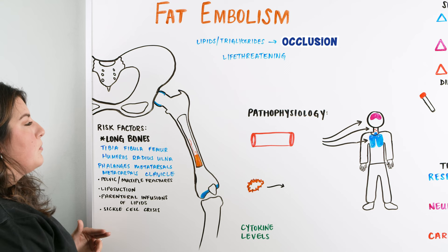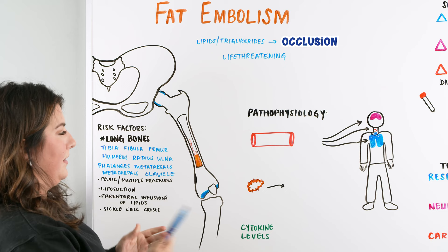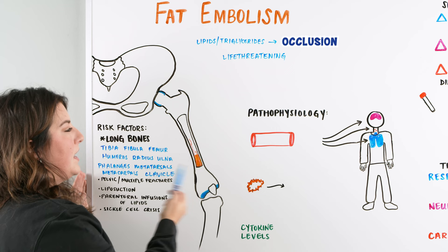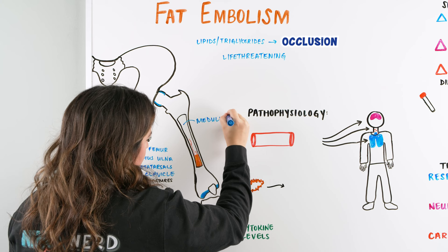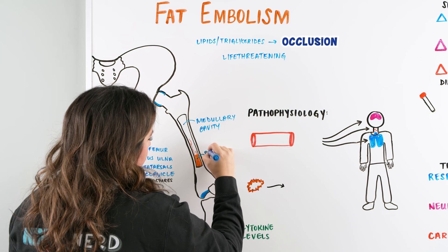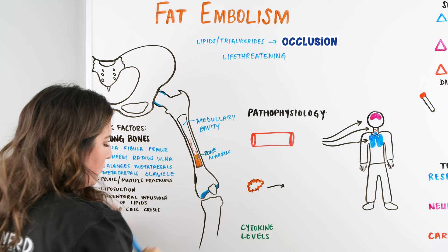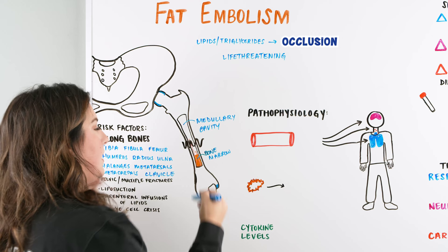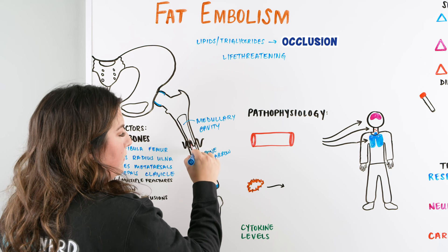You're thinking, how does the fat get in there? How does it go from where it should be to where it shouldn't be? In our long bones, we have the medullary cavity, and in there we have our bone marrow. What happens is within these fractures, we get a break within the bone, and it disrupts this cavity where our bone marrow is. All of a sudden, these globules within the cavity can enter into the small little vessels that are within our bones, and they start to travel.